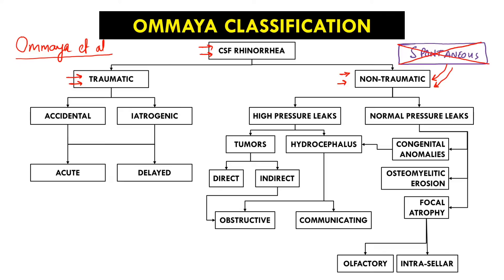Traumatic CSF rhinorrhea was classified as accidental and iatrogenic variants. Very importantly, these can again be of two types: acute or delayed onset. Acute onset or presentation is within seven days of the injury, whereas if it is delayed beyond seven days, this is a delayed presentation or delayed onset of CSF rhinorrhea in the traumatic variant.